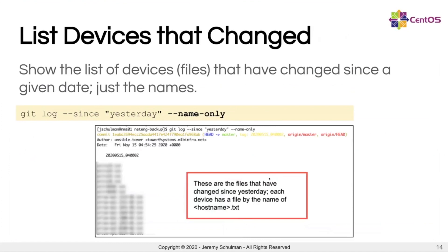When you need very granular and specific results, you can do that using the git log command. I'm showing this on our CentOS server in the directory where the git repo is pulled down and where we're backing up our config. We can always go to our jump server and see the configs that were backed up — it's in the form of a git repo, so we can use git commands. The git log command gives you nice capabilities for searching. I can say since yesterday, show me all the file names that have changed — each file name represents a device — giving me a quick view of what devices have changed since yesterday. You can give specific timestamps or humanized friendly names like 'yesterday' or 'two days ago'.